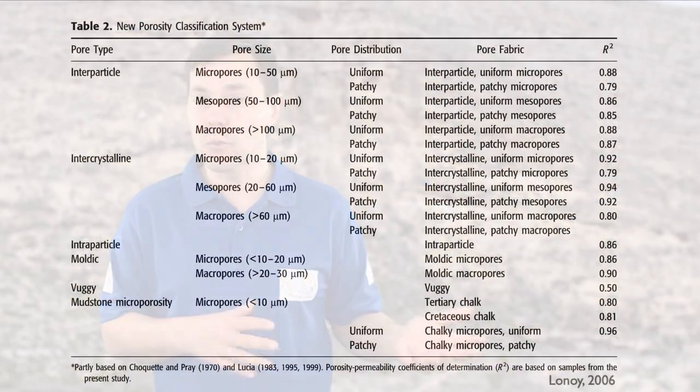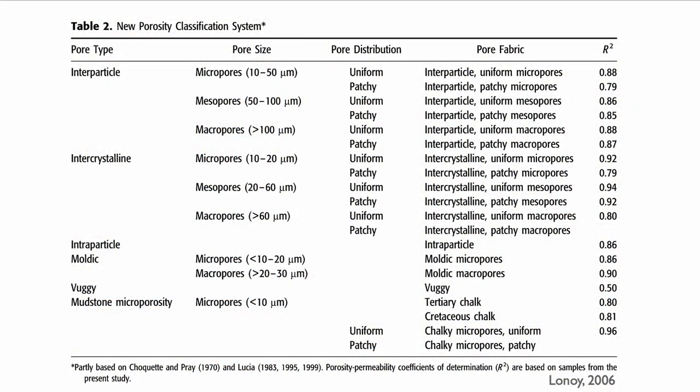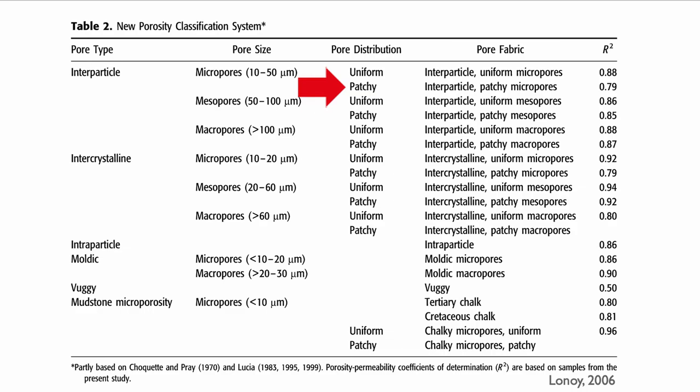Another very important distinction of Lenoir compared to Lucia or previous classifications is that Lenoir gives a pore distribution indication — whether the pores are uniformly distributed or whether their distribution is more patchy. That gives you basically pore fabric. An example of pore fabric would be interparticle uniform micropore — you just use these three terms together.